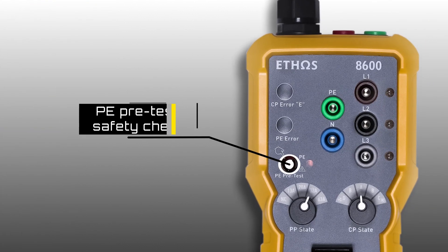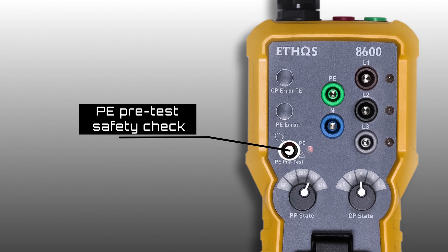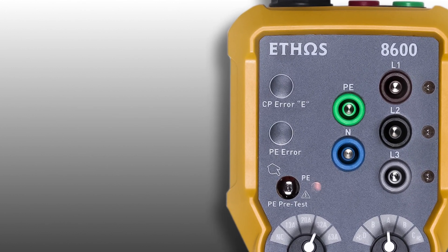PE pre-test safety check. This is to check if there is any dangerous voltage on the earth. If a red neon illuminates, stop the testing procedure and investigate further.